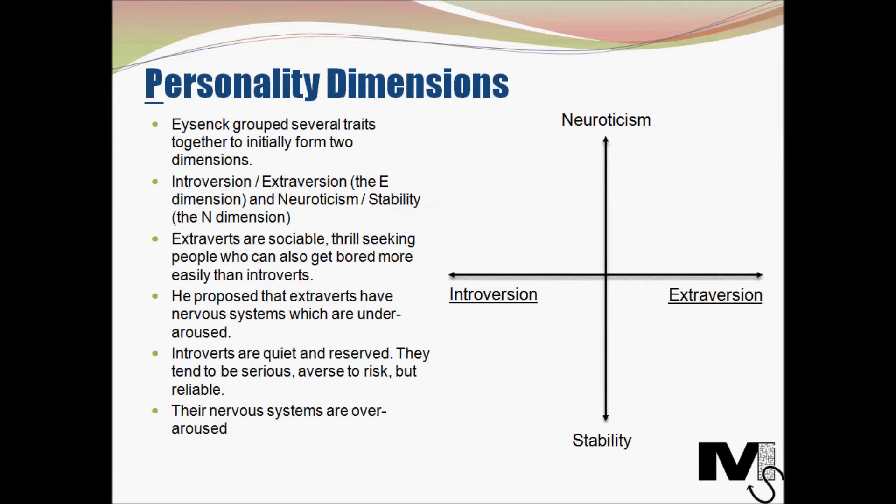Now let's understand the concept of personality dimensions. Eysenck grouped several traits together to initially form two dimensions, also called second-order personality traits. These initial two dimensions are introversion versus extroversion, also called the E-dimension, and neuroticism versus stability, also called the N-dimension.